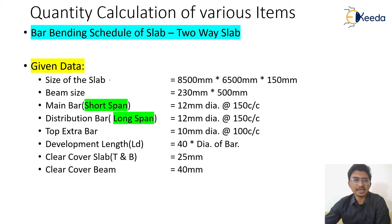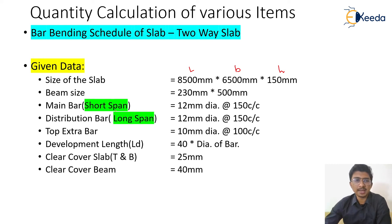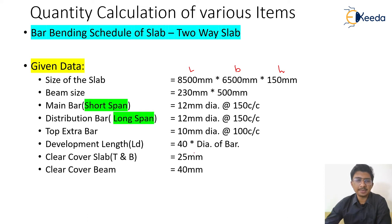The size of the slab given is 8500 x 6500 x 150 mm, that is length x breadth x height. The beam size supporting on both sides is 230 x 500 mm. Main bars along the short span are 12 mm dia at 150 mm center to center; distribution bars are also 12 mm at 150 mm center to center. Top extra bars are provided at the edges for better anchorage: 10 mm dia at 100 mm center to center. The development length is 40d, clear cover for the slab is 25 mm, and clear cover for the beam is 40 mm.